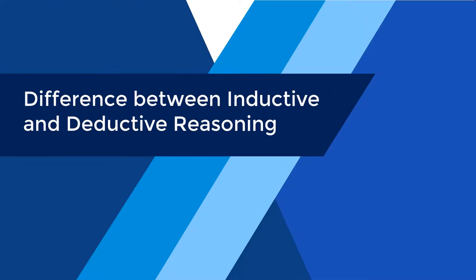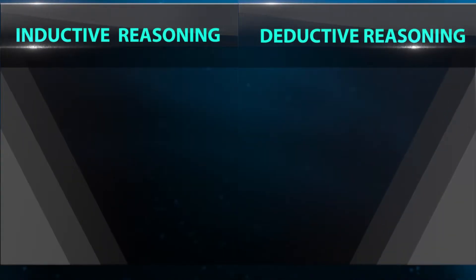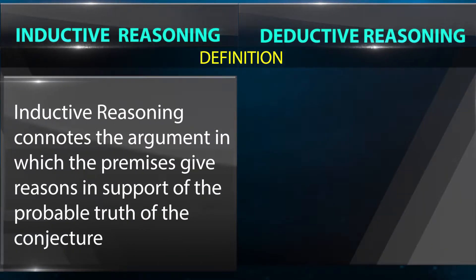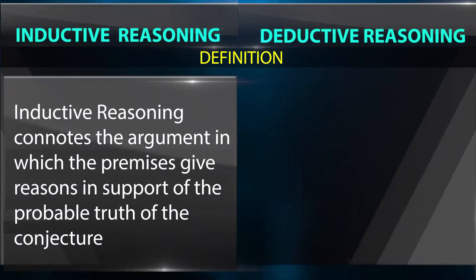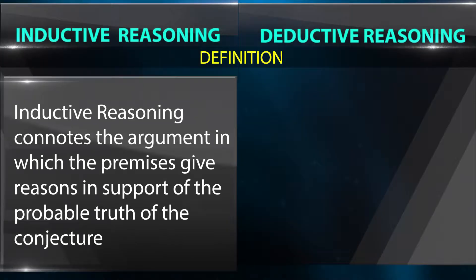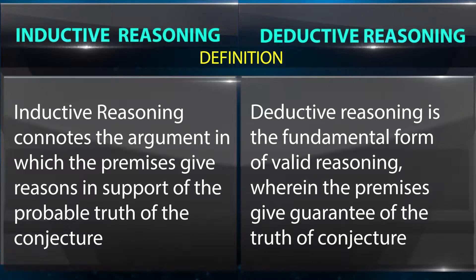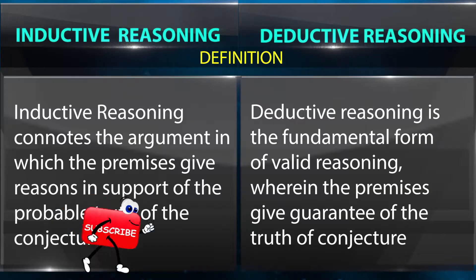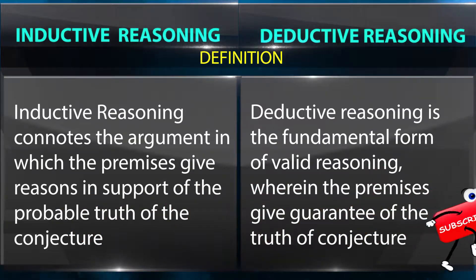The difference between inductive and deductive reasoning: Inductive reasoning is defined as an argument in which the premises give reasons in support of the probable truth of the conjecture. Deductive reasoning is the fundamental form of valid reasoning wherein the premises give a guarantee of the truth of the conjecture.